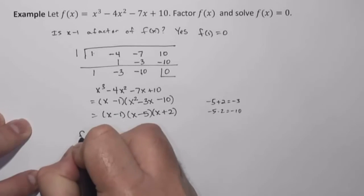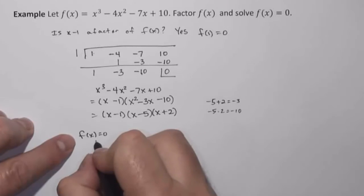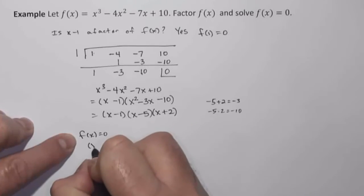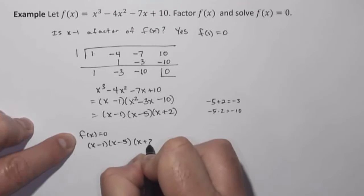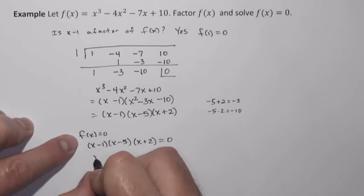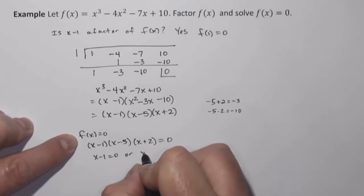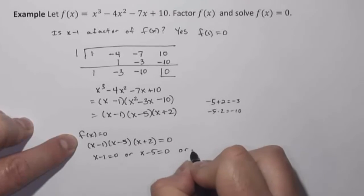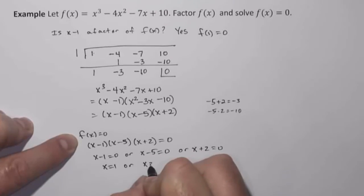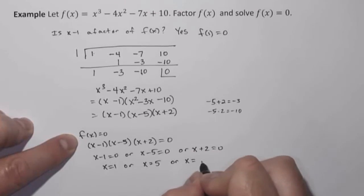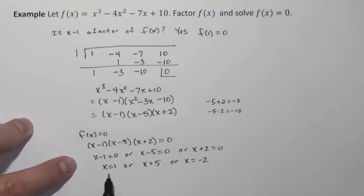Now, to solve f of x equals 0, then I know that f of x equals this. So that means x minus 1 times x minus 5 times x plus 2 must equal 0. So that means either x minus 1 equals 0, or x minus 5 equals 0, or x plus 2 equals 0. So that means x equals 1, or x equals 5, or x equals negative 2. So we have solved f of x equals 0. We've gotten 1, 5, and negative 2 as the solutions to that equation.